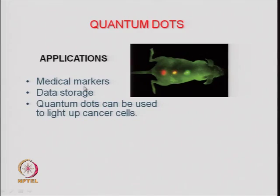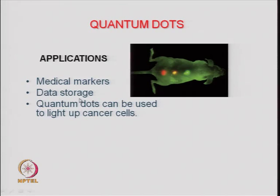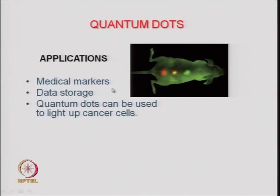In medicine and biosensing applications there is tremendous importance for quantum dots. Apart from that, you can use quantum dots in data storage. We earlier looked at data storage using magnetic nanoparticles in DVDs and CDs. Nowadays you can also use optical properties of nanoparticles for optical encoding and store data based on the optical properties of quantum dots. The most important area, however, is biosensing and as medical markers to identify specific regions within organs or within a living being, identifiable by the specific emission of a particular wavelength of light from a particular sized nanoparticle.